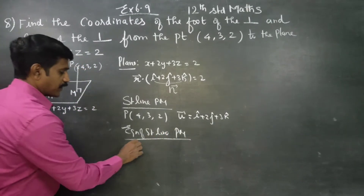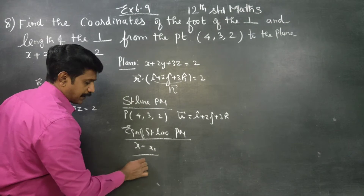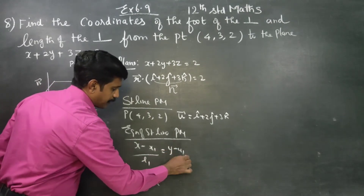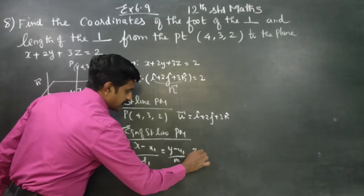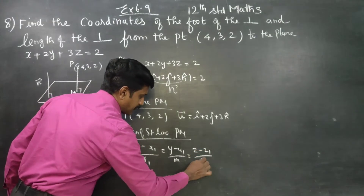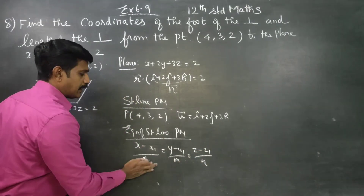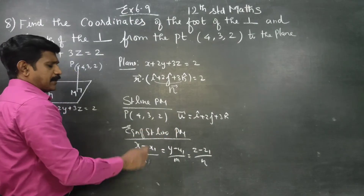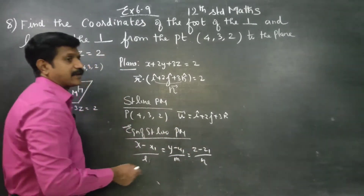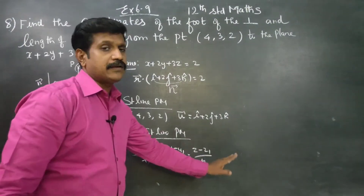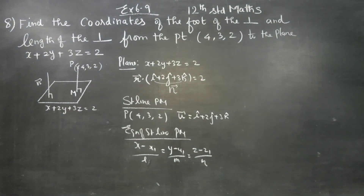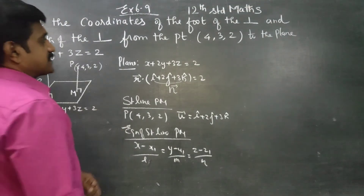The equation of a straight line formula is (x minus x1)/L = (y minus y1)/m = (z minus z1)/n, where the direction ratios are b1, b2, b3. I have the equation of straight line PM. Once the point and parallel direction are known, we can substitute directly using the formula.